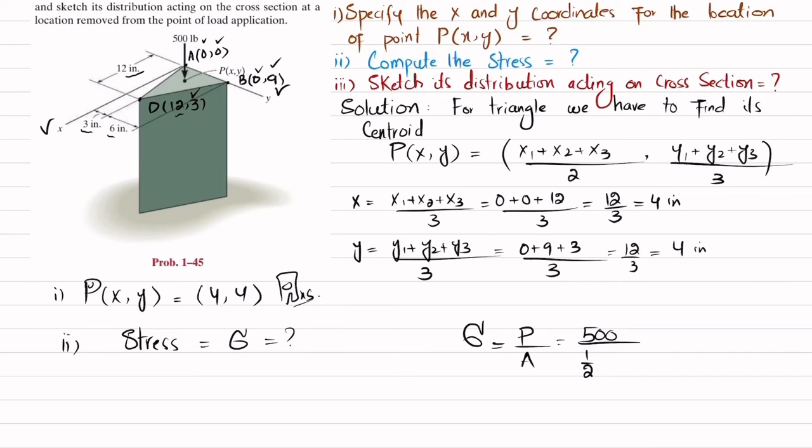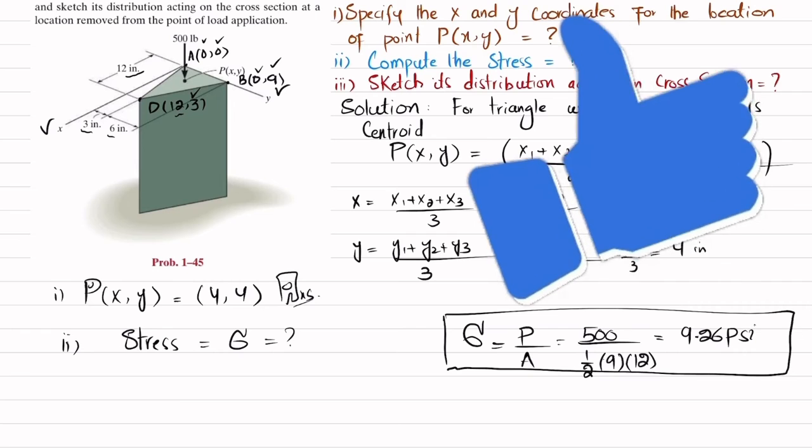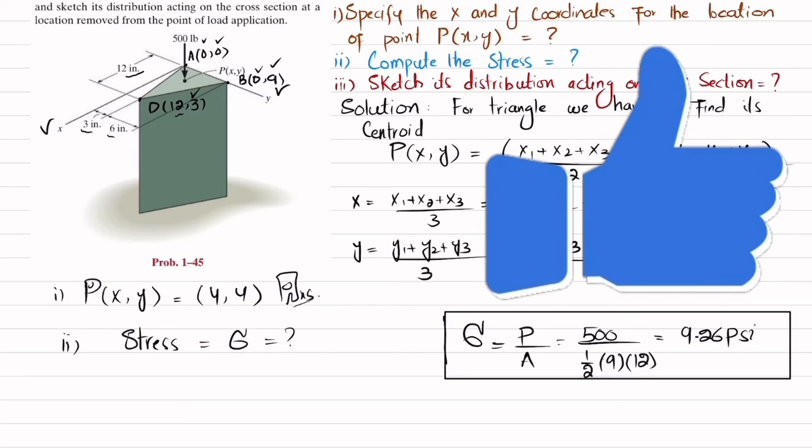The area of the triangle is equal to 1/2 times its base, which is 9, and its altitude, which is 12. So 1/2 times 9 times 12. When you calculate it, you will get the stress equal to 9.26 psi. This is the answer to the second part.